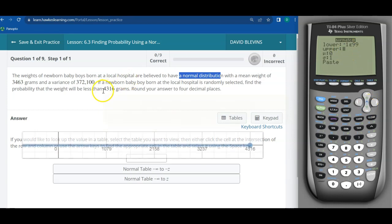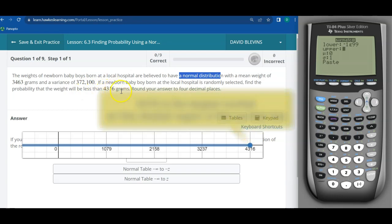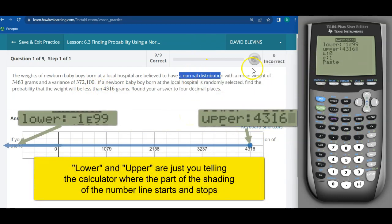And then the upper number would be this one because it's the numbers that are less than this, this is the biggest number that we would be dealing with. So 4316.